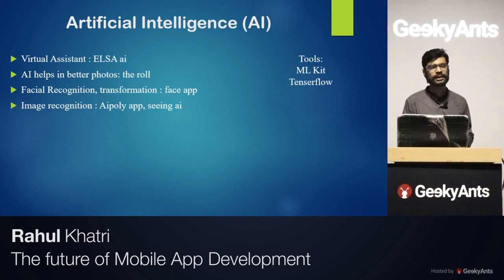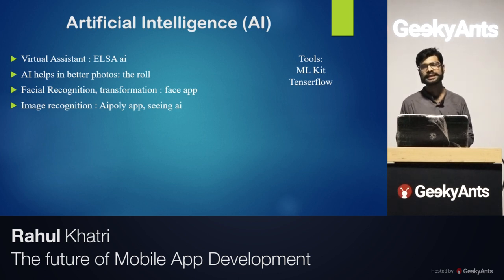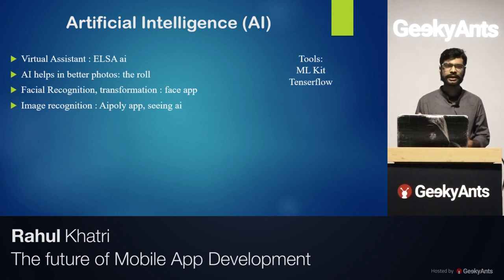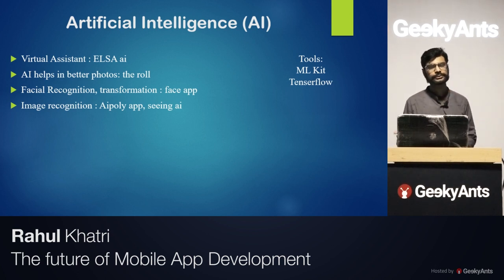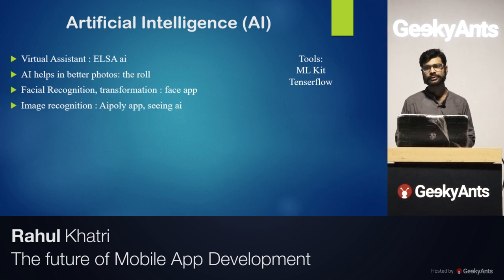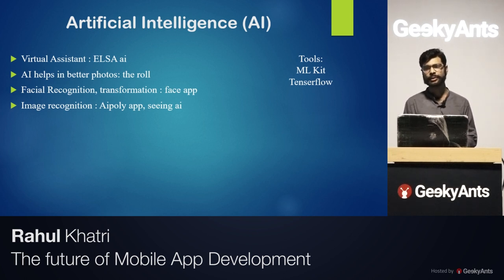For developing AI features, tools like ML Kit (machine learning kit) and TensorFlow are available. ML Kit contains machine learning algorithms that you can use to build AI features inside your app for iOS, Android, or other platforms. Currently, these AI features are mostly limited to Android and iOS, but in the near future, they will extend to different platforms.